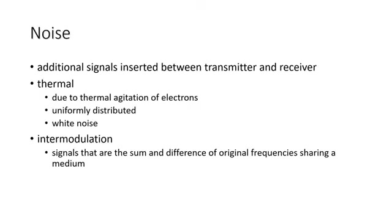For any data transmission event, the received signal consists of the transmitted signal modified by distortions, plus additional unwanted signals referred to as noise, inserted somewhere between transmission and reception. Noise is a major limiting factor in communication system performance. Noise may be divided into four categories: thermal noise, intermodulation noise, crosstalk, and impulse noise.